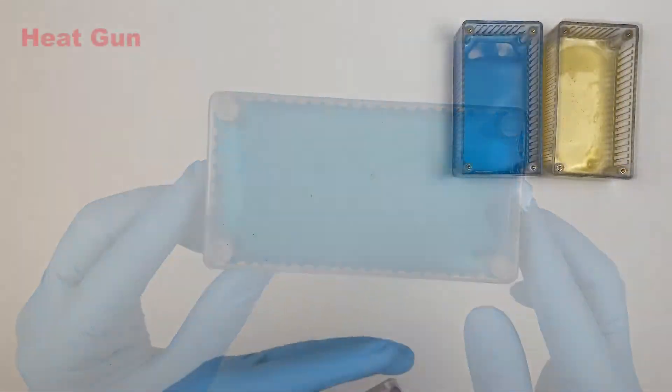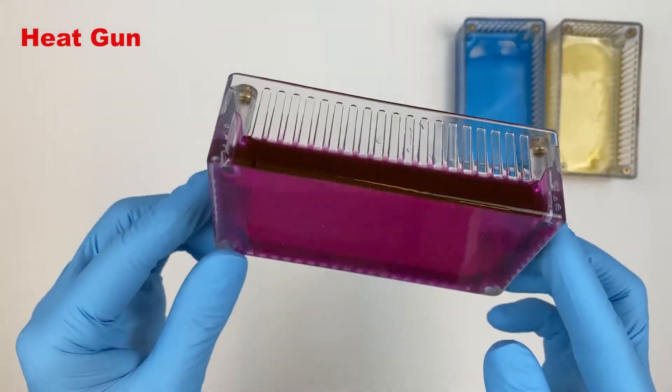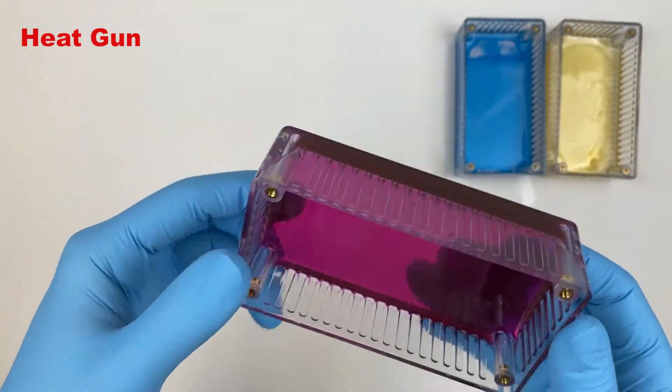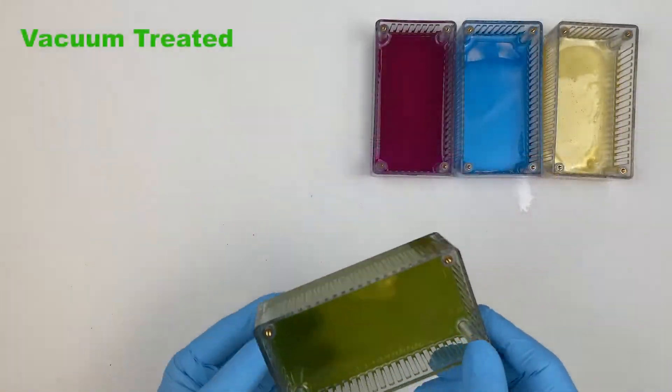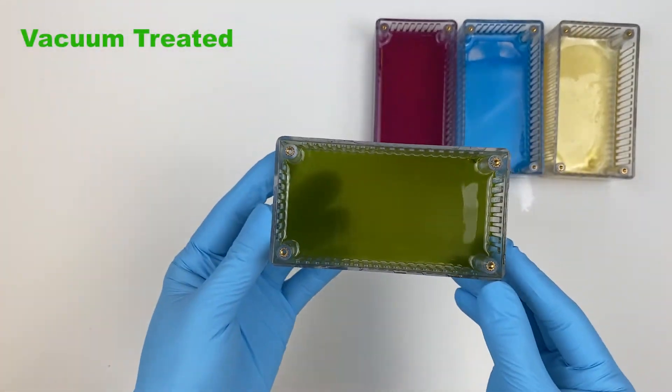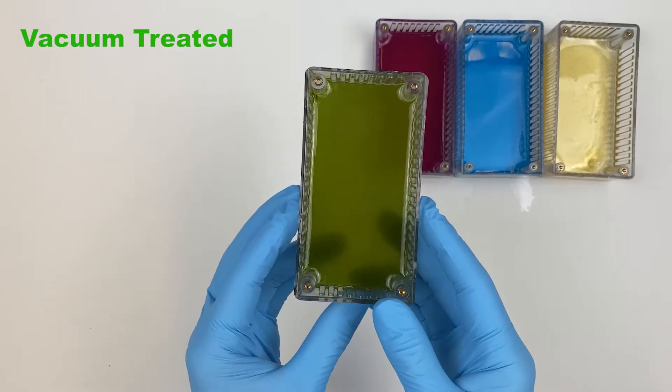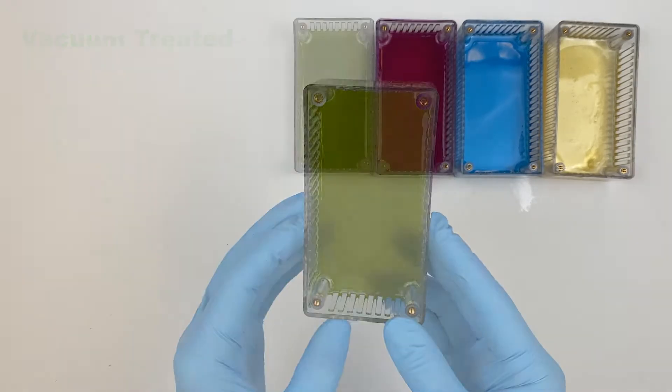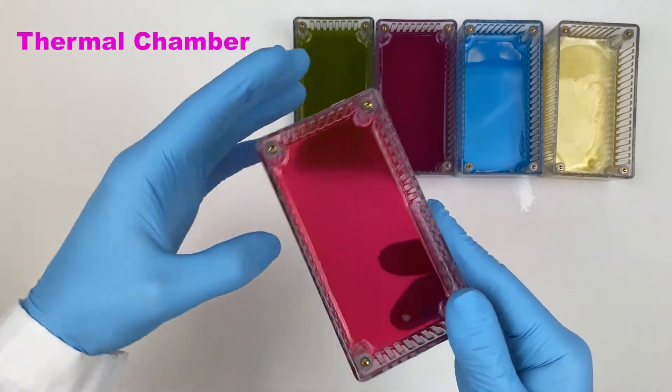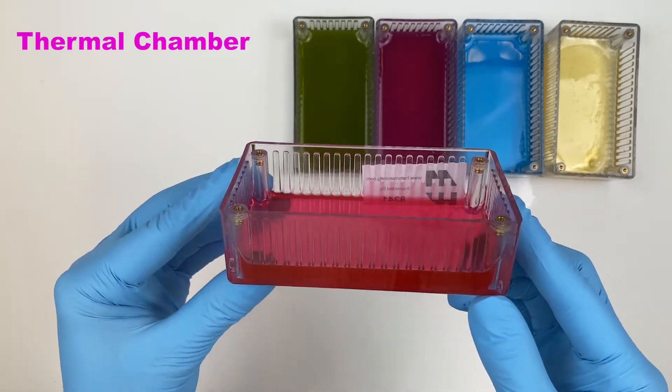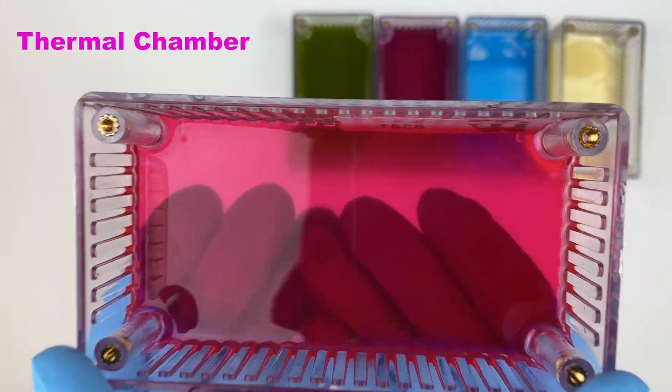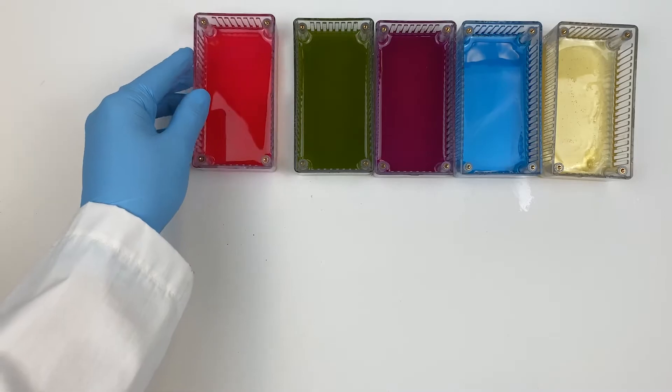The same can be said for sample 3 which used a heat gun to achieve the same results. Sample 4 used a vacuum chamber which sucked all the ingressed air from the sample to leave a bubble-free finish, while sample 5 which used a hot oven to cure the sample has also given us a clean clear finish.